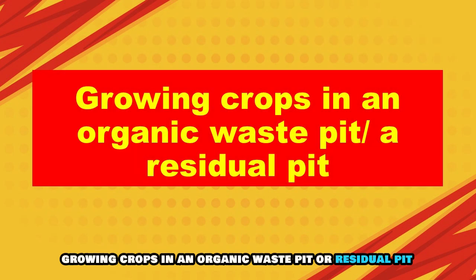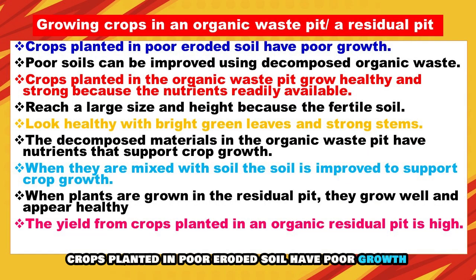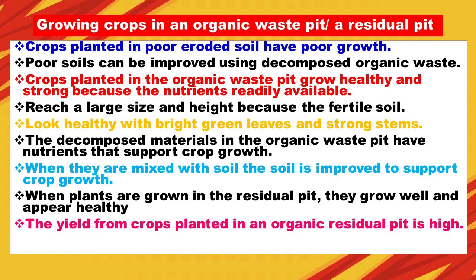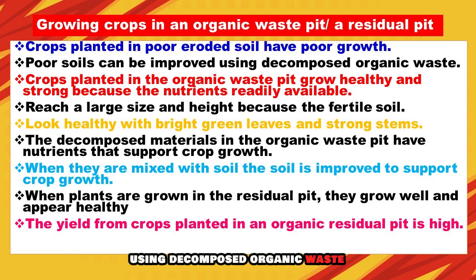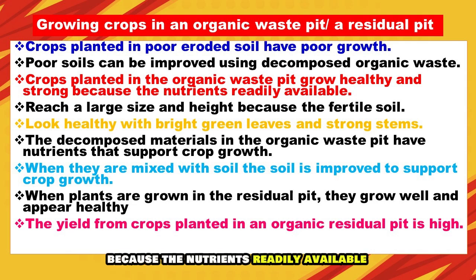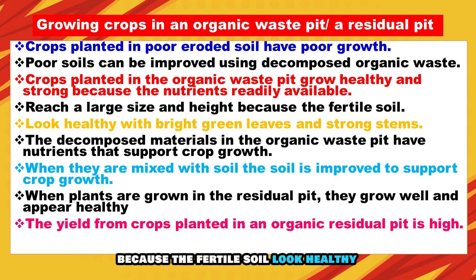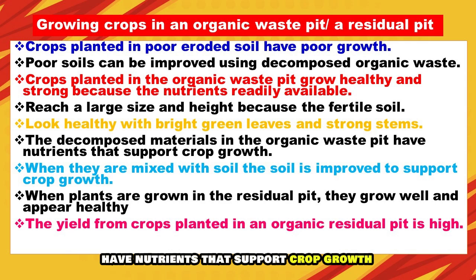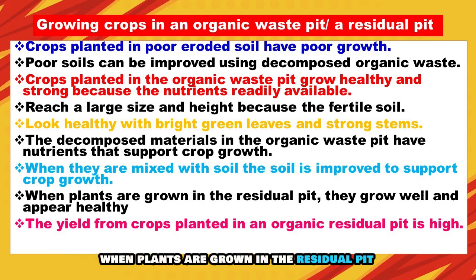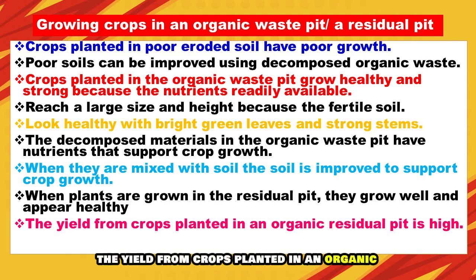Growing crops in an organic waste pit or residual pit: Crops planted in poor eroded soil have poor growth. Poor soils can be improved using decomposed organic waste. Crops planted in the organic waste pit grow healthy and strong because nutrients are readily available. They reach a large size and height because of the fertile soil, look healthy with bright green leaves and strong stems. The decomposed materials in the organic waste pit have nutrients that support crop growth. When plants are grown in the residual pit, they grow well and appear healthy, and the yield is high.